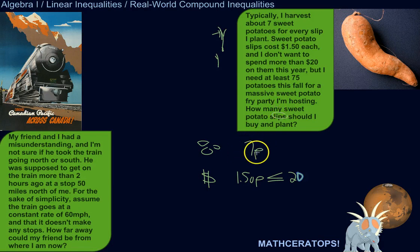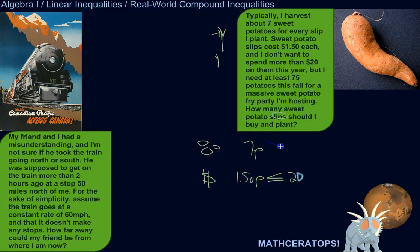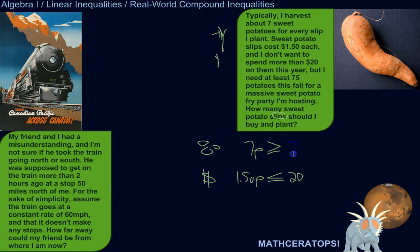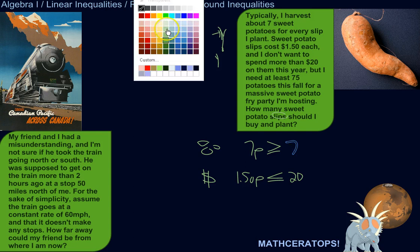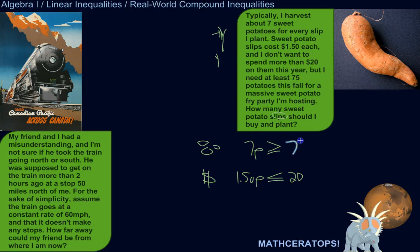I'm getting seven sweet potatoes for every slip I plant, and that needs to be at least 75 potatoes. So 7P needs to be greater than or equal to 75. At the very minimum it can be 75, but I'd really like it to be more.